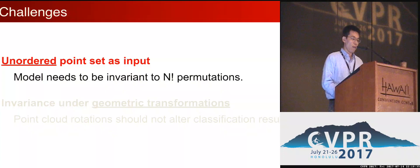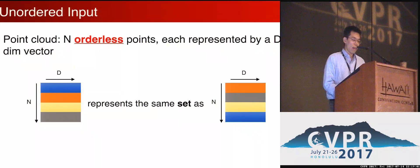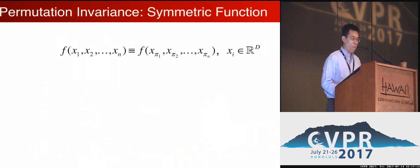Our design for the PointNet architecture is motivated by two challenges. The first challenge is how to design a neural network for unordered set input. We use a 2D array to represent a point cloud. Each point is a D-dimensional vector — in the simplest case, a point is just an XYZ coordinate, but it can also include RGB, laser intensity, or surface normals, etc. Since point cloud is a set, its elements are orderless, meaning that with row permutation, the new array represents exactly the same set. Therefore, our neural network needs to be invariant to n-factorial permutations.